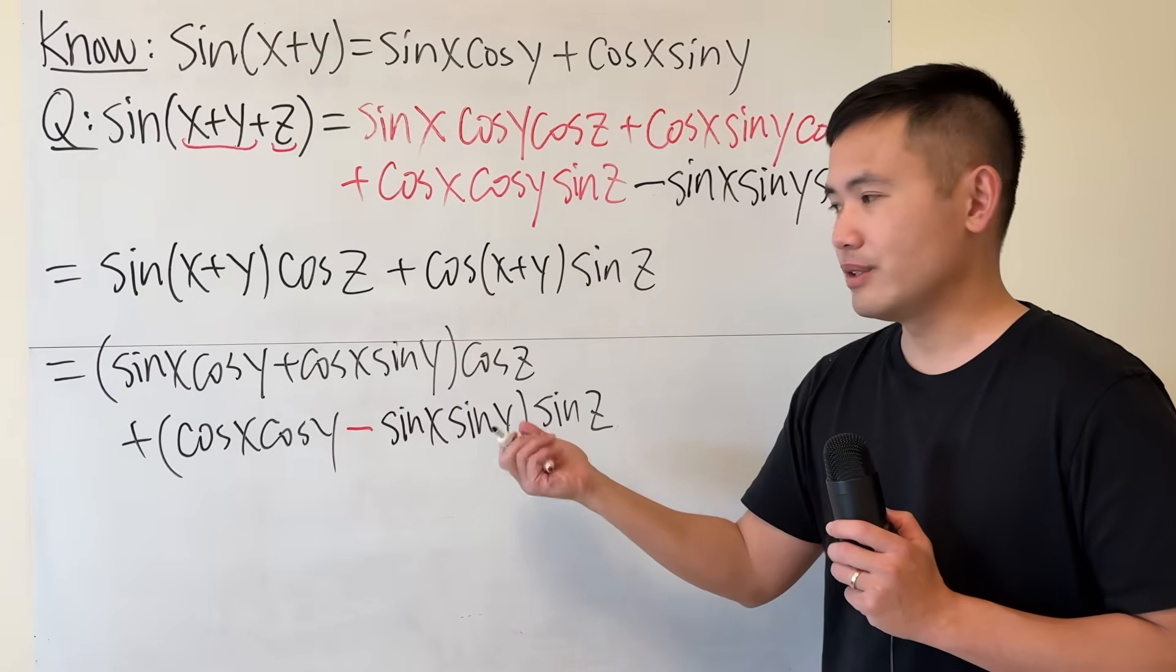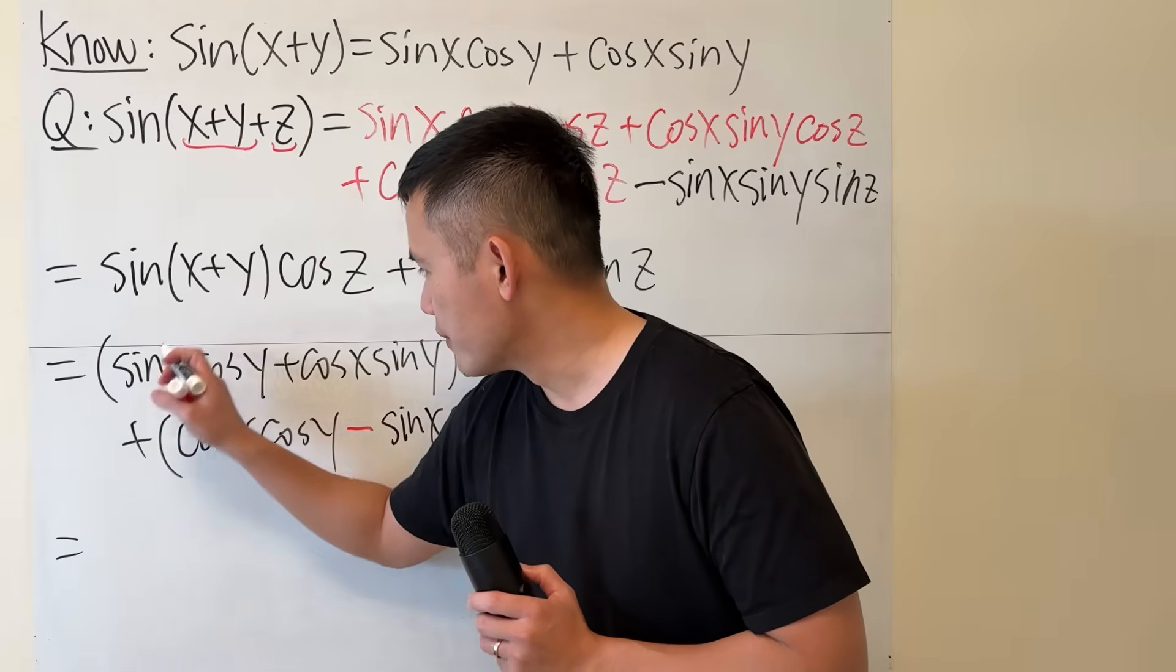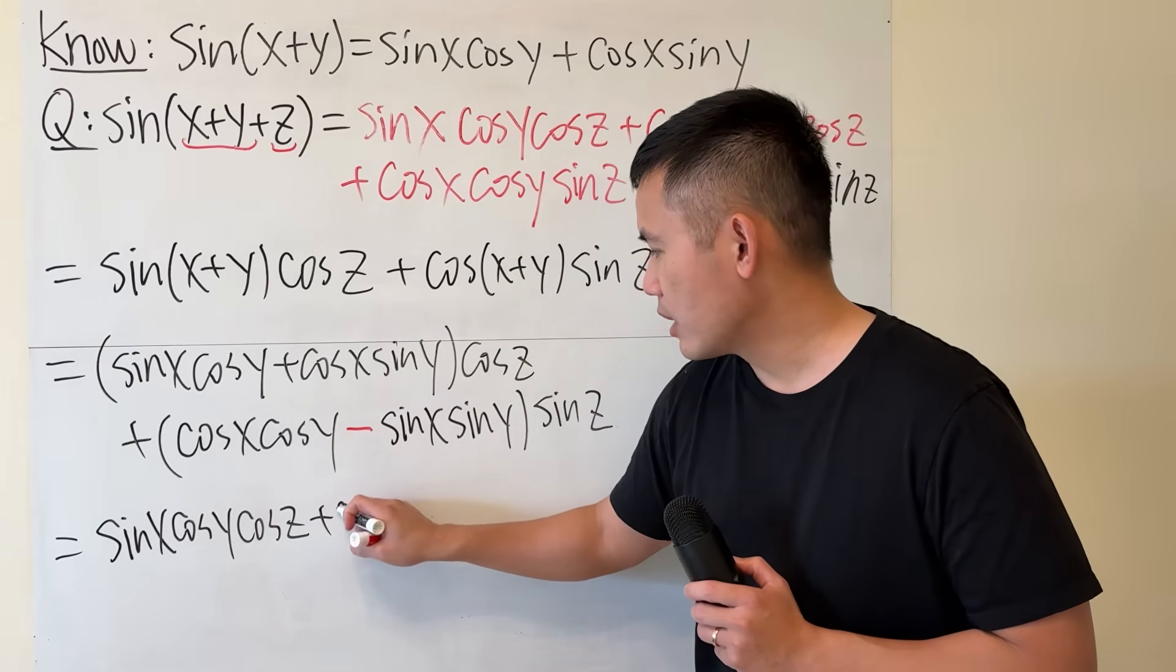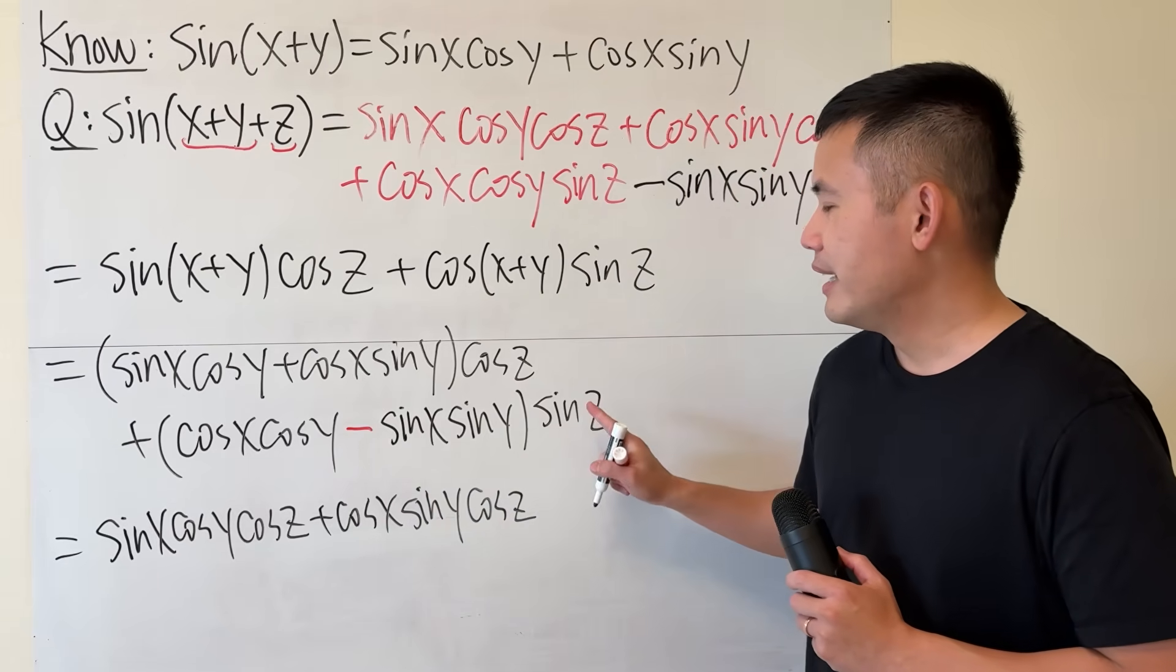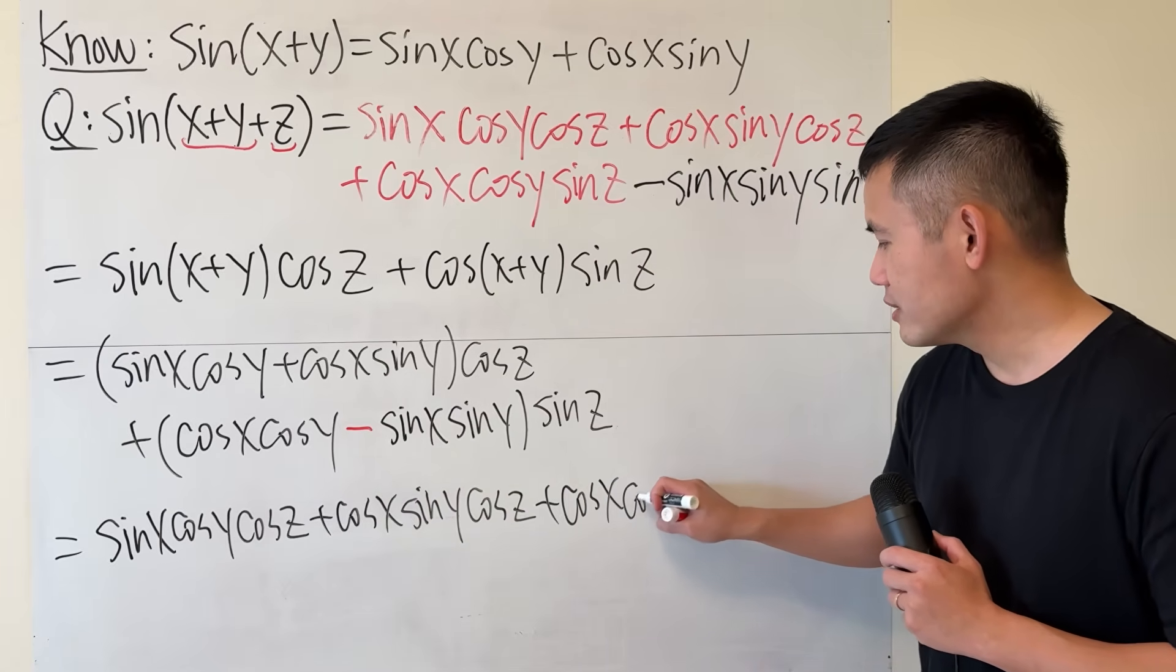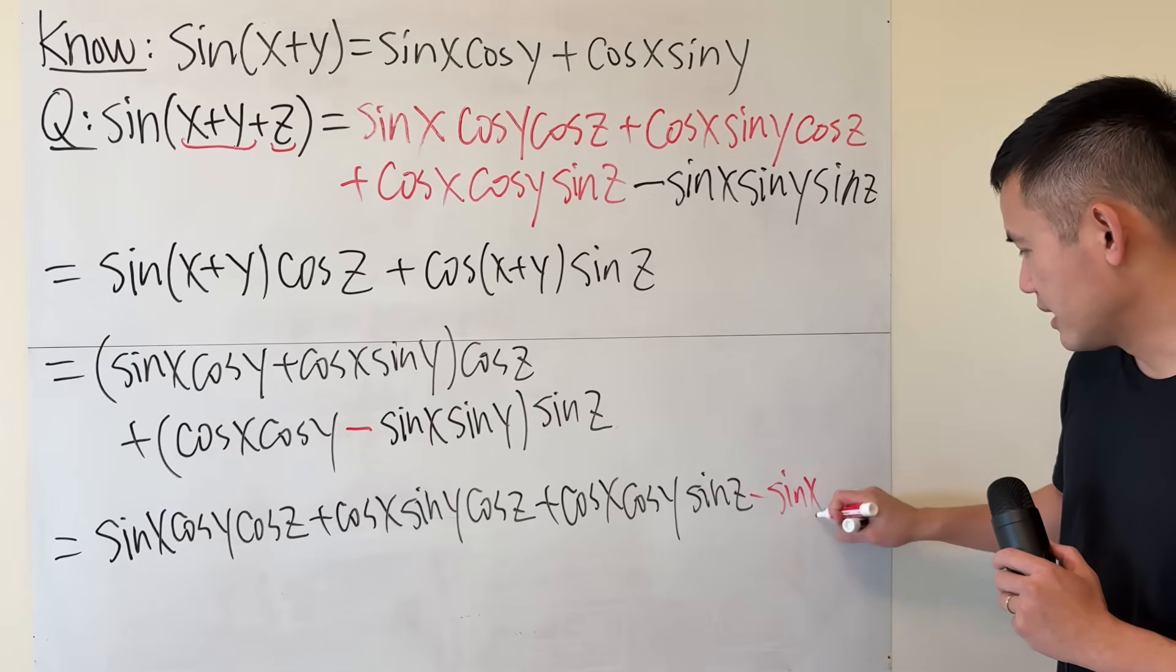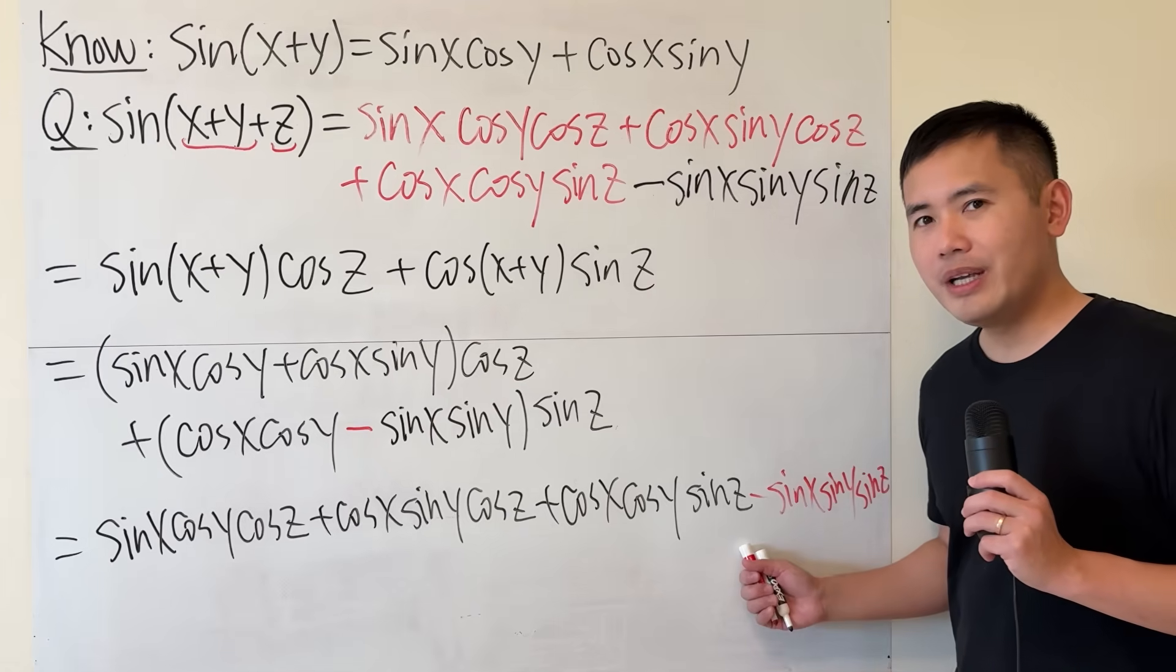And this is how we get the minus right here. And now we just have to distribute it and things will work out very nicely. Multiplying cosine z into here we get the first one, sine x cosine y cosine z, and then plus cosine x sine y cosine z. And then distribute this, we get plus cosine x cosine y cosine z, and then lastly subtract, so I will just put this down, subtract sine x sine y sine z.